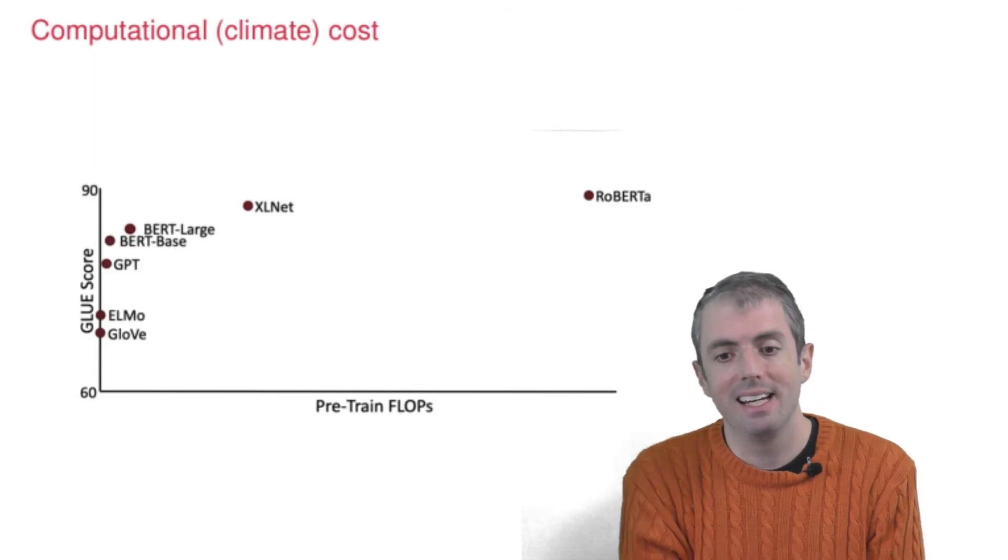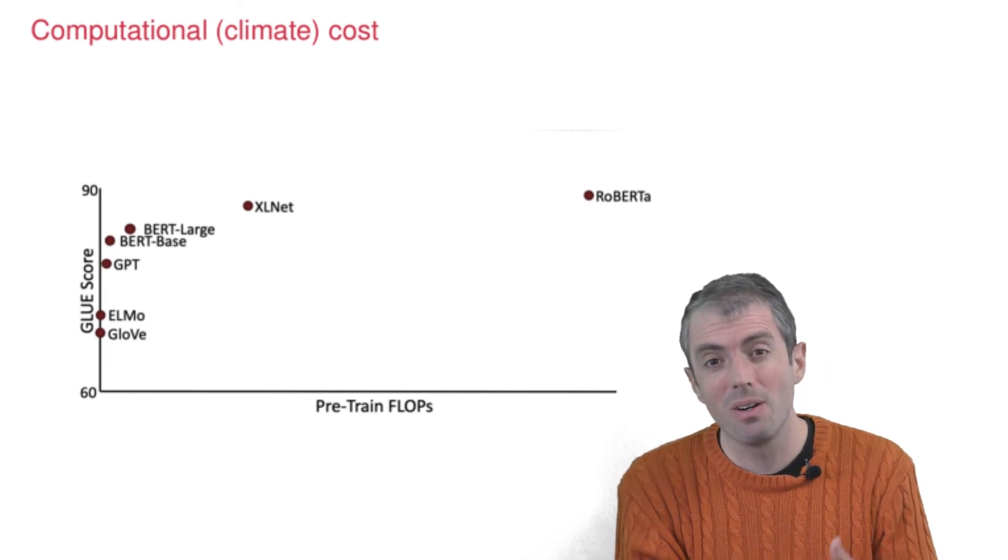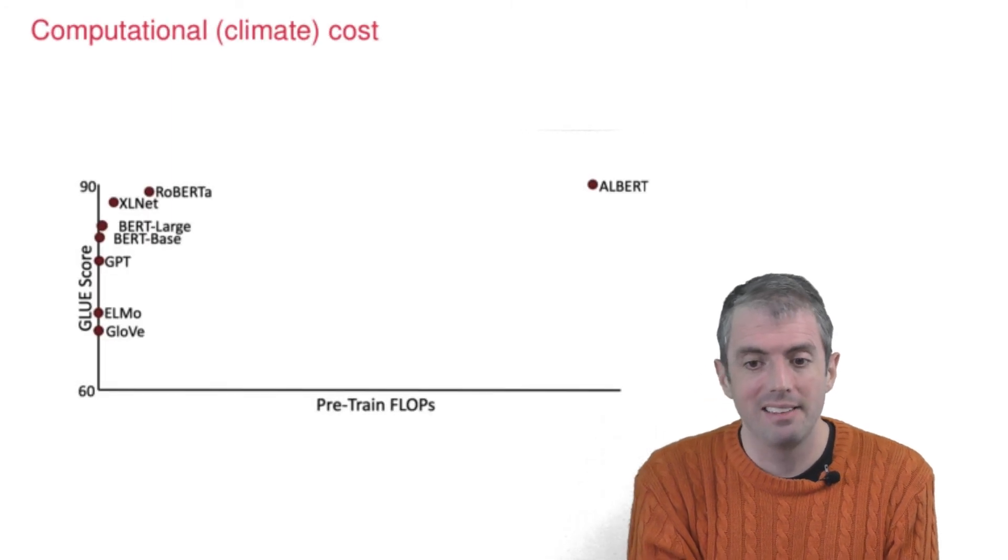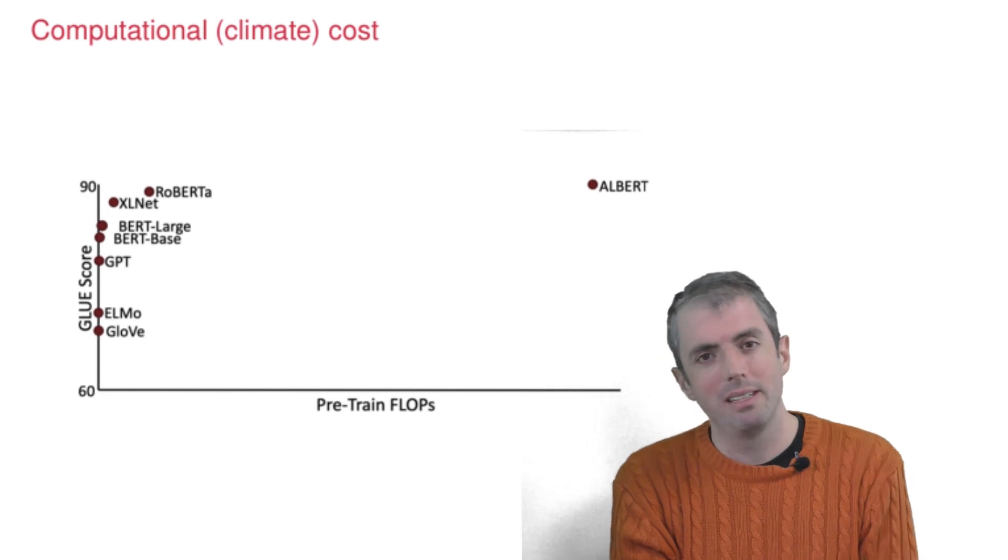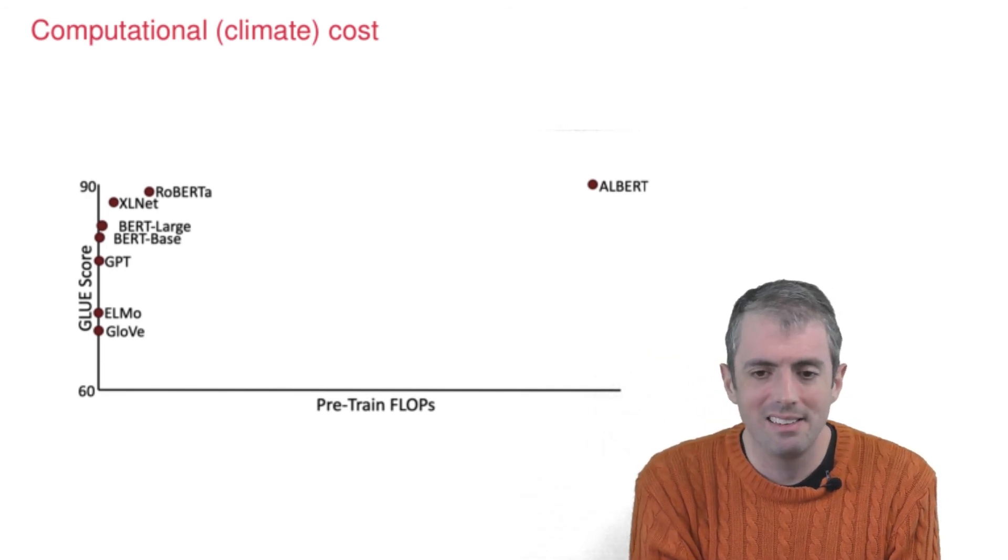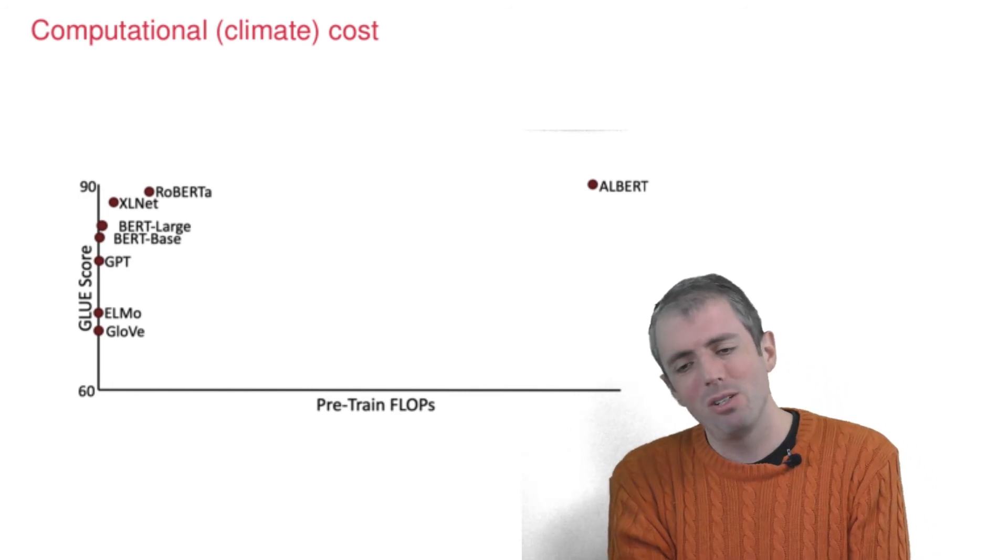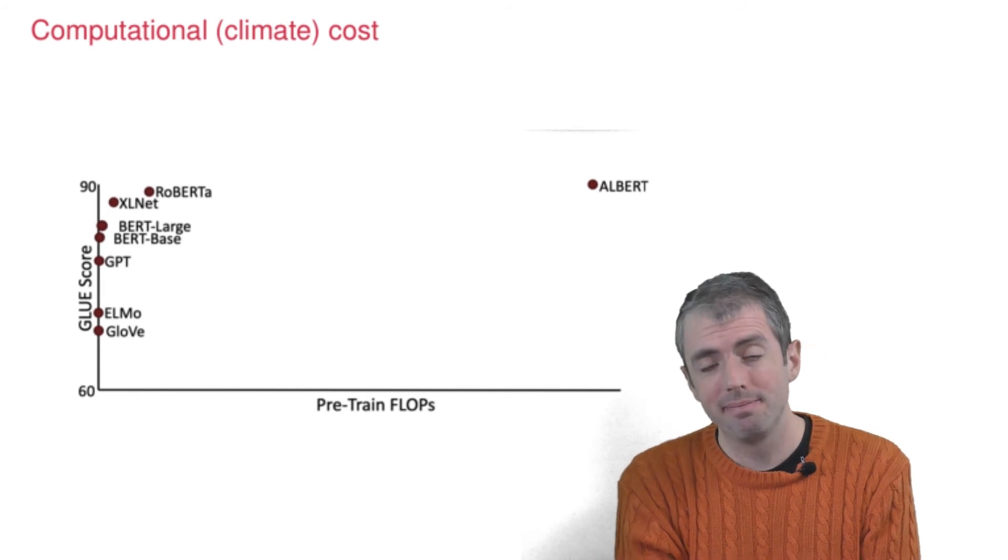We had XLNet and RoBERTa doing much more computation for not that much more performance. And today we have ALBERT, which broke the Muppet naming trends, and it's doing just a teensy bit better for a huge computational cost. And is it worth it? I don't know.